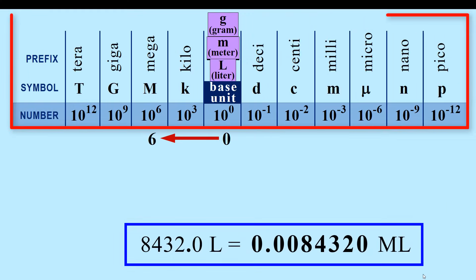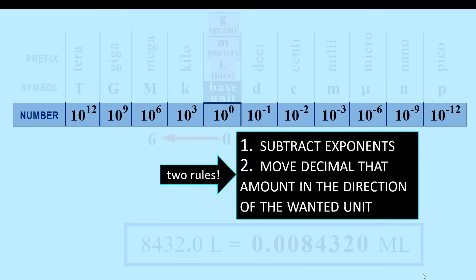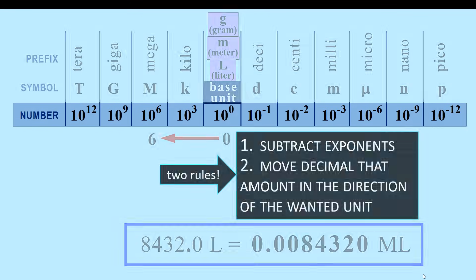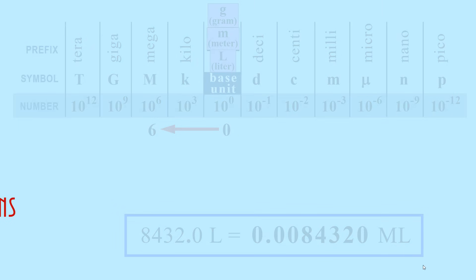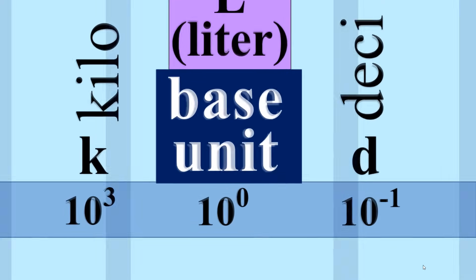All you need is this chart and the two rules. Subtract exponents and move the decimal that amount in the direction of the wanted unit. If you want the chart, it is linked in the description below. That's it for another Mad Scientist production. See ya!